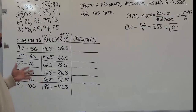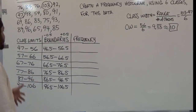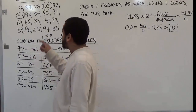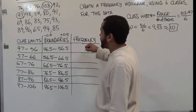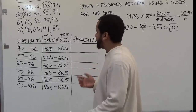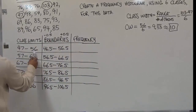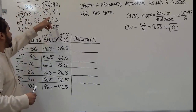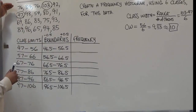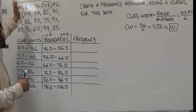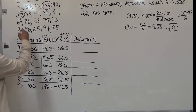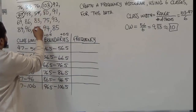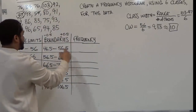Now we have our boundaries and need to get the frequency. Be very careful when doing this. I'll look at the class limits and check all the values, striking them out as I count them. Going from forty-seven to fifty-six, I'll go downward column by column to avoid mistakes. Forty-seven to fifty-six gives us two values for that first class.